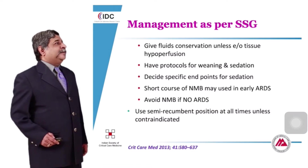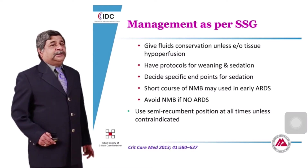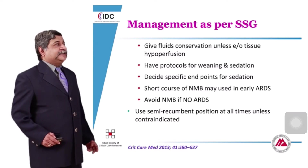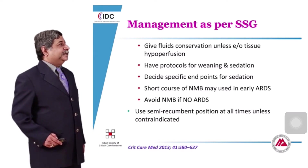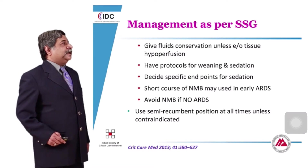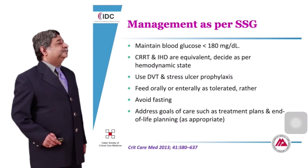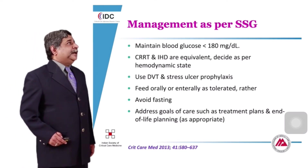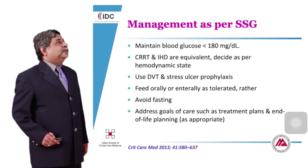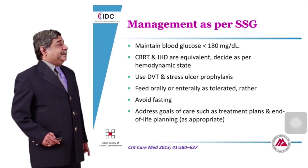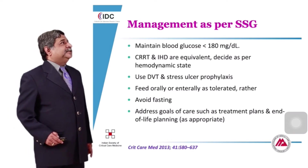A short course of neuromuscular blockade may be used in early ARDS — there is only one study supporting this, and it is not a strong recommendation. Avoid neuromuscular blockade if there is no ARDS. Use semi-recumbent position at all times unless contraindicated. Maintain blood glucose less than 180 mg/dL. Continuous renal replacement therapy and intermittent hemodialysis are considered equivalent per the guidelines.